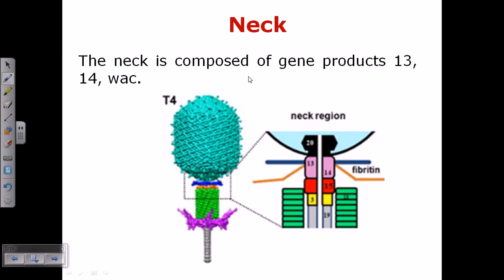The neck acts as a joint region connecting the head with the tail. It is made up of a cylindrical or circular arrangement of proteins — specifically protein 13, protein 14, and Wac. In the schematic presentation, the blue-colored ring represents the neck. Internally it is built up with proteins 13, 14, and fibritin, which is required to make the ring-like structure throughout this region.